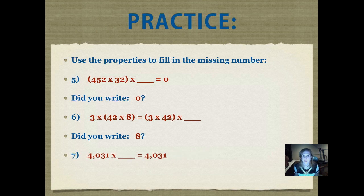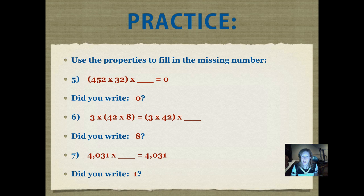Number seven: 4031 times what equals 4031? Write it down in your journal and push play when you're ready. Did you write 1? This is the identity property — anytime you multiply a number by 1, you get the same number.